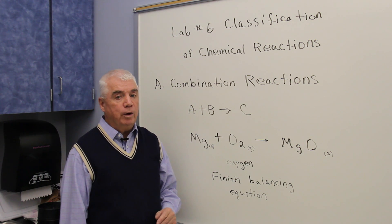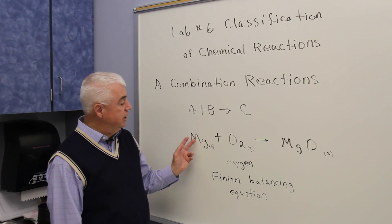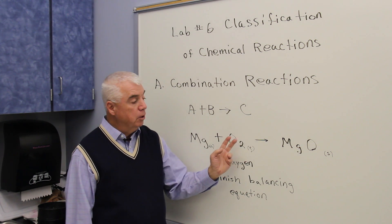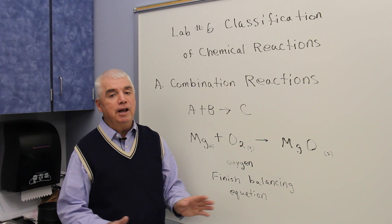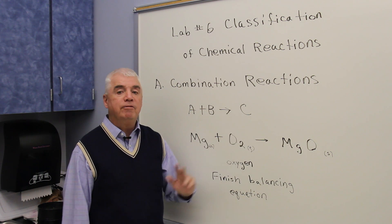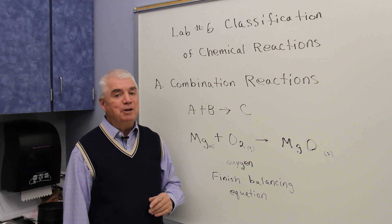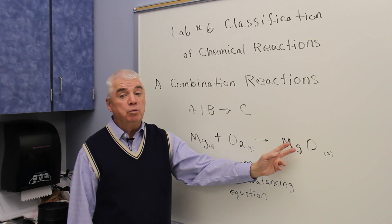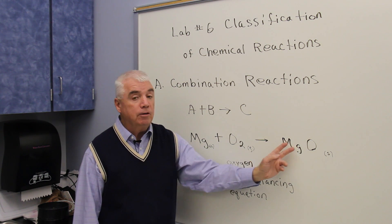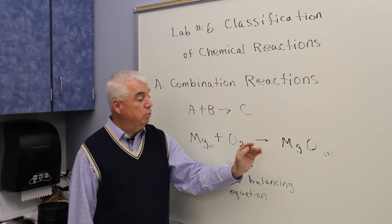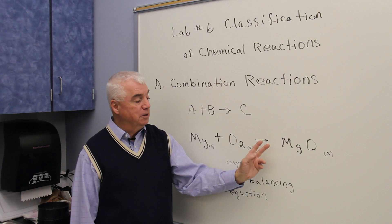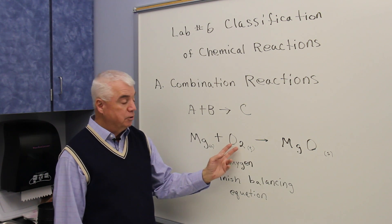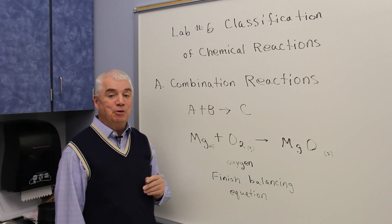I'd like you to finish balancing this equation, but here are some tips. If I look at magnesium, I've got one on each side, but two oxygens on the left and only one oxygen on the right — an even number and an odd number. They're never going to balance unless both sides have an even number of oxygens. This tip for balancing equations is called 'even up the odd.' I can get an even number by placing the coefficient 2 in front. Then I'd have two oxygens on each side, and we'd put a 2 in front of the magnesium as well.